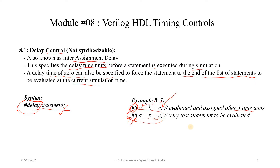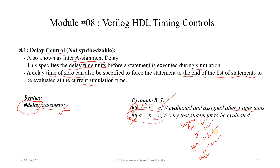For example, if we have `x = b`, `y = c`, `a = b` with zero time unit delay, and then `b = c` inside a begin-end block — the execution order will be: x = b first, then y = c, then b = c, and finally a = b will be executed last.